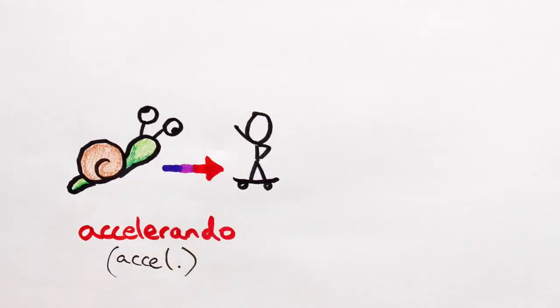On the flip side, accelerando, a.k.a. accel, tells us to get gradually faster. And, of course, we can add poco and molto if we so desire.